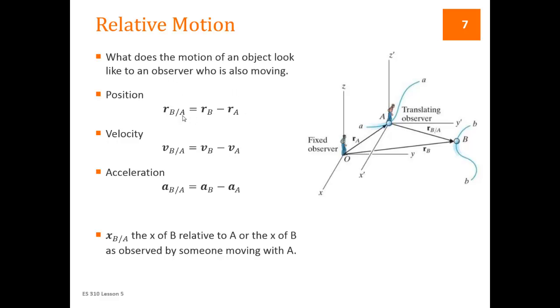The other thing to remember is it's the first minus the second. So B relative to A would be B minus A. B slash A, B minus A. If it were vice versa, VA slash B, so the velocity of A relative to somebody at B, it would be VA minus VB.